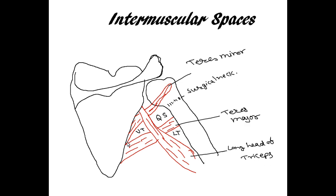The upper triangular space: above we have the lower border of the teres minor muscle, below we have the upper border of the teres major, and on the lateral side we have the medial border of the long head of the triceps.